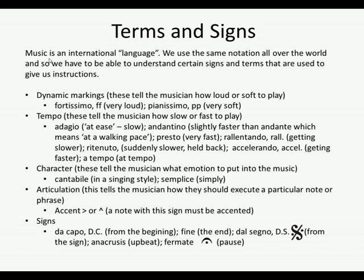Rallentando, often shortened to rit, means getting slower. You'll often see it at the end of a piece of music, and that'll tell you that you really need to slow down a bit. Ritenuto means suddenly slower or held back. Accelerando, often shortened to accel, means getting faster. And a tempo means at tempo — this will be marked after you've had a change in the tempo and the composer is trying to tell you to go back to your initial tempo.